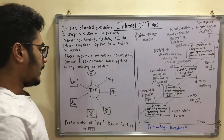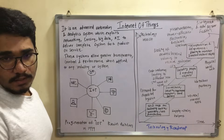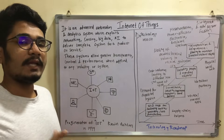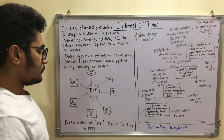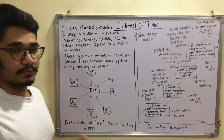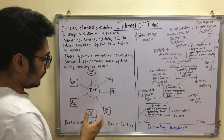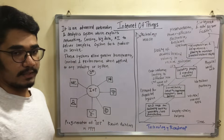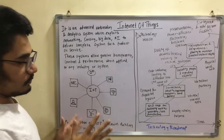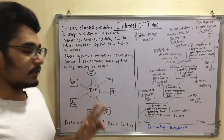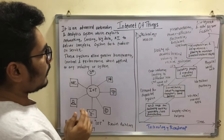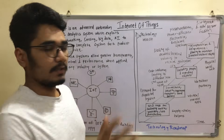The term IoT was very first coined in the year 1999, and the progenitor of this term was Kevin Ashton — he is the person who first coined the term Internet of Things.